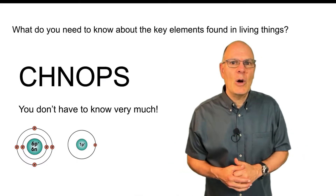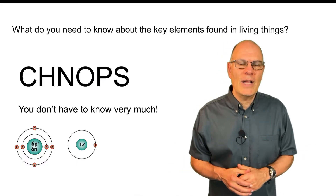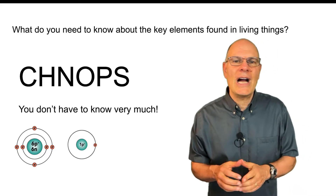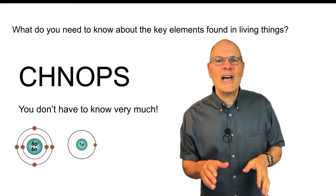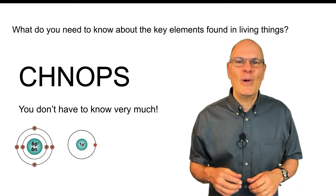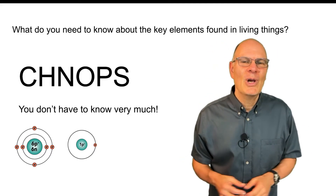So what do you need to know about the elements of life? Carbon, hydrogen, nitrogen, oxygen, phosphorus, and sulfur — sometimes referred to as CHNOPS.